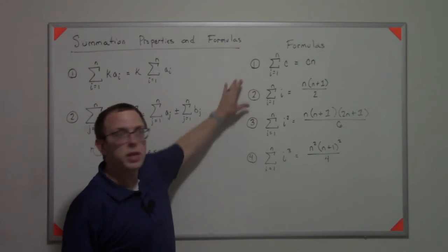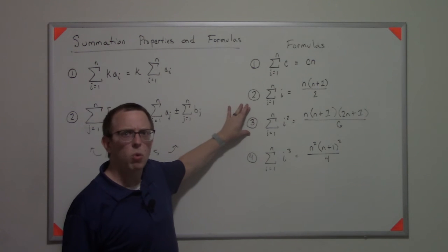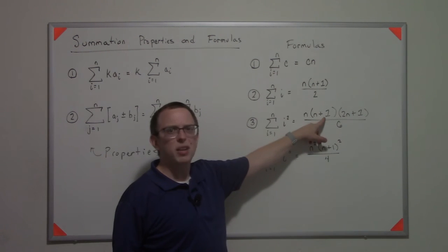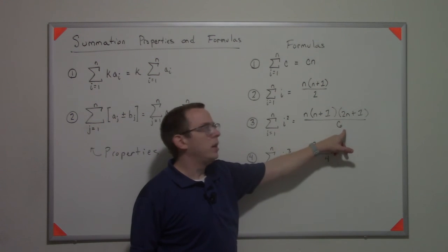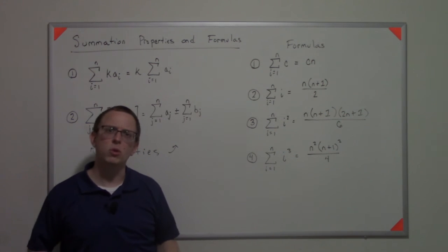These are relatively easy to remember. This one's a little more complicated. You have an n, you have an n plus one, but then you have this two n plus one and you divide it by six. So that one can be a little harder to remember.